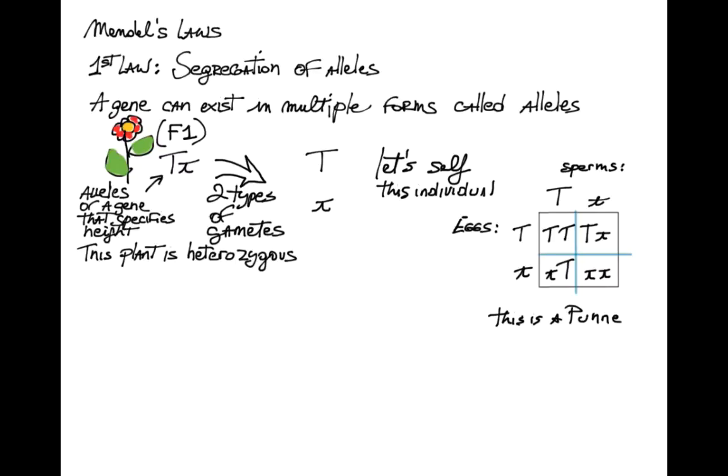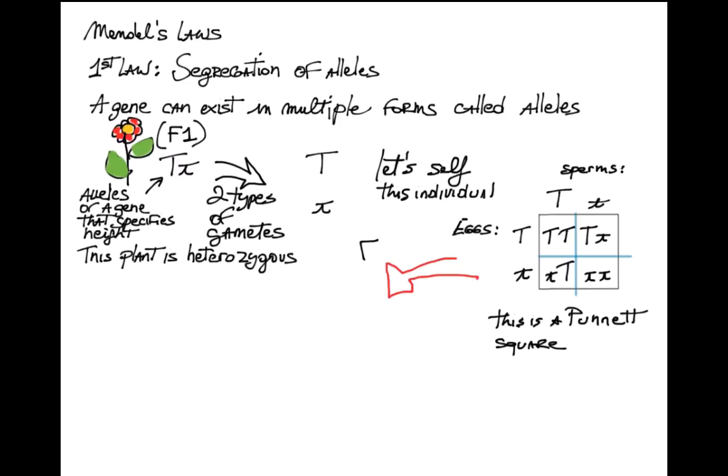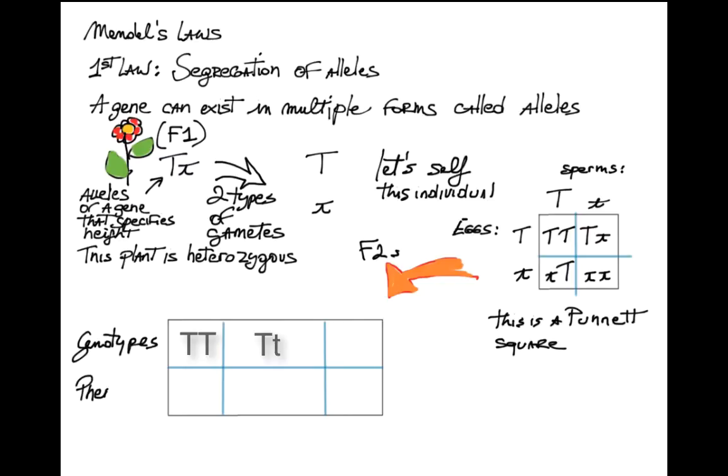The Punnett square represents all possible outcomes. In the F2 generation, we see three different genotypes: big T big T, little t, and big T and little t.